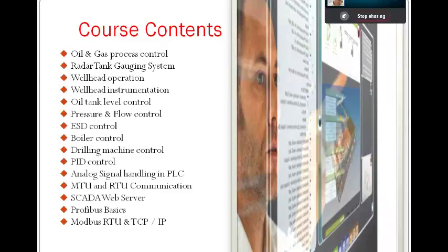Then there is pressure and flow control. When you talk about the oil and gas sector and instrumentation, there are four main terms: pressure, level, flow, and temperature. These are the four main components in oil and gas process control.